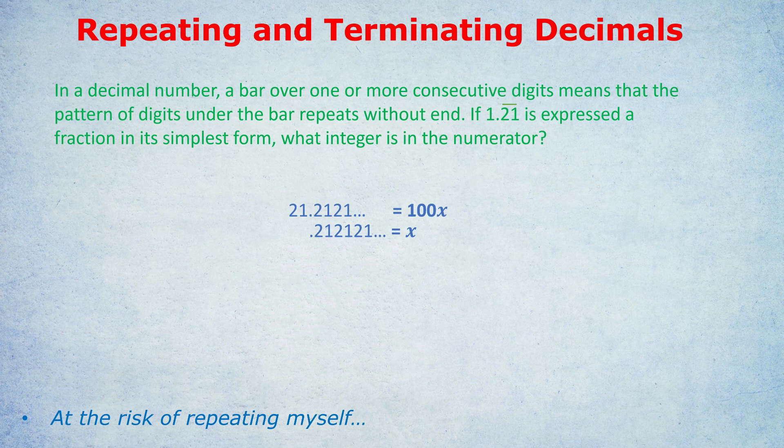Now I'm going to subtract those two terms or those two equations. On the right, 100x take away x is 99x. And on the left, notice the 0.21's cancel out. Even though it carries on to infinity, they cancel out to infinity. So you're just left with 21.0 or just the number 21. And that equals 99x. Finally, dividing both sides by 99, we get x is 21 over 99. And look at what we've accomplished. We've converted a repeating decimal into a simple fraction.